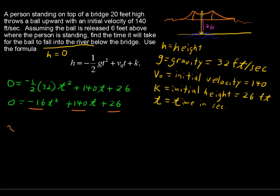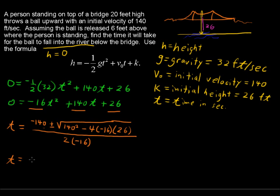We're using t here. So let's stay with that variable. t equals negative b, so negative 140 plus or minus the square root of b squared. 140 squared minus 4 times a, that's negative 16, times c, which is 26. This is all over 2 times a, 2 times negative 16. That's 2 times negative 16.